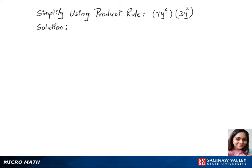To simplify 7y power 4 times 3y power 2, we first write the like bases together, which is 7 times 3 times y power 4 times y power 2. We can now use the product rule.